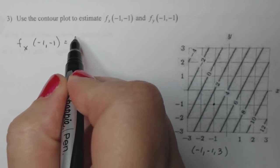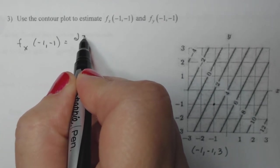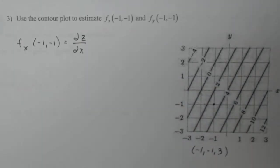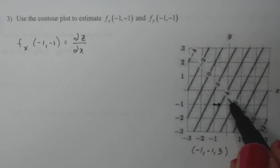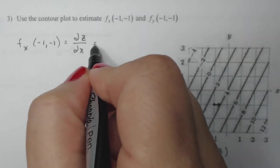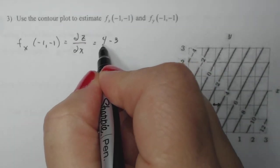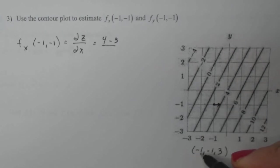Now I know that f sub x is the partial of z with respect to x. So I'm going to make a small change in x and see how it makes a change in z. When you have a contour map, you just go parallel to the x axis to the next contour, and then I have my output there as four. My output originally was three, and my original x was minus one.